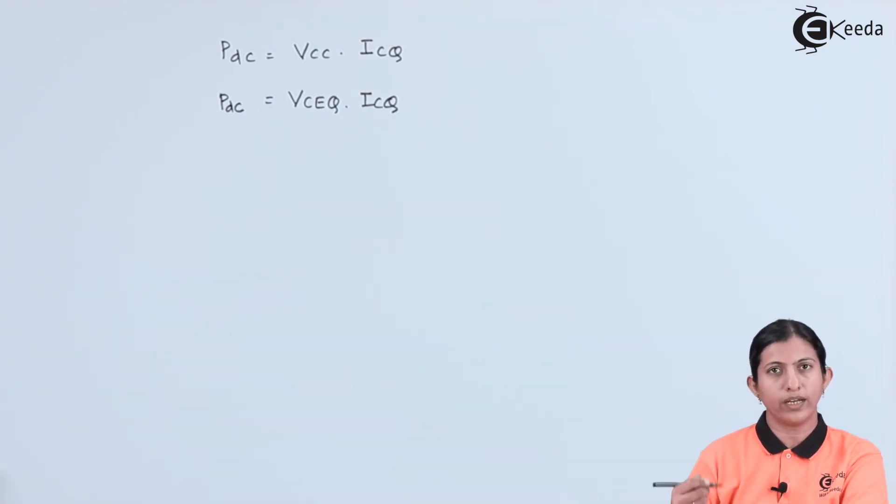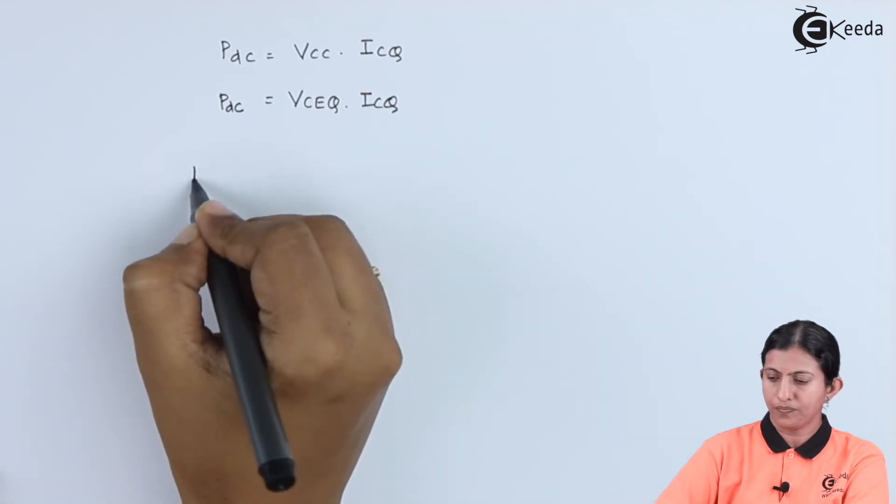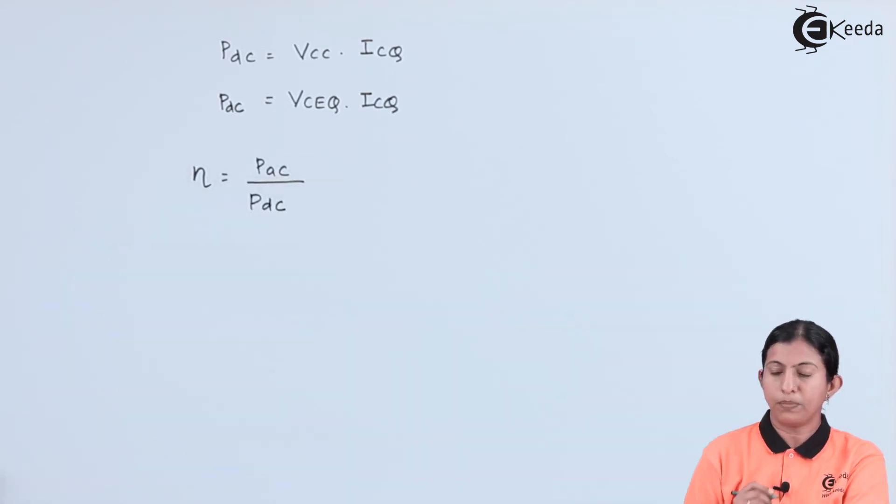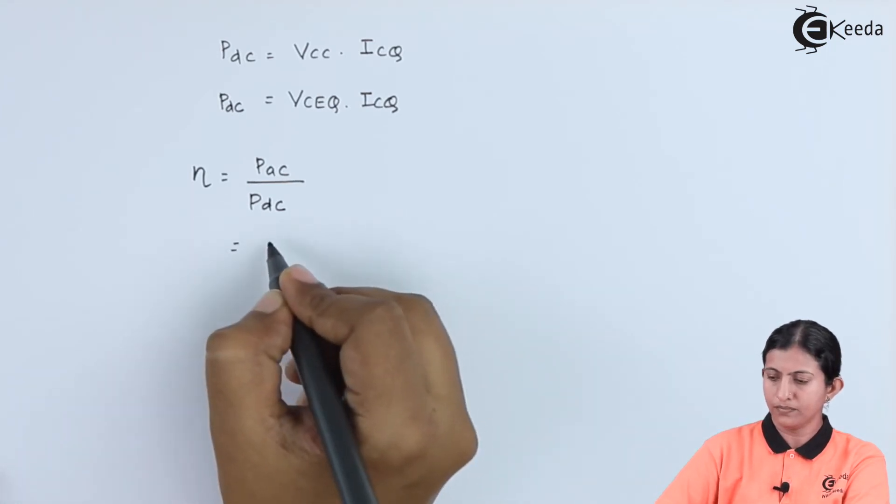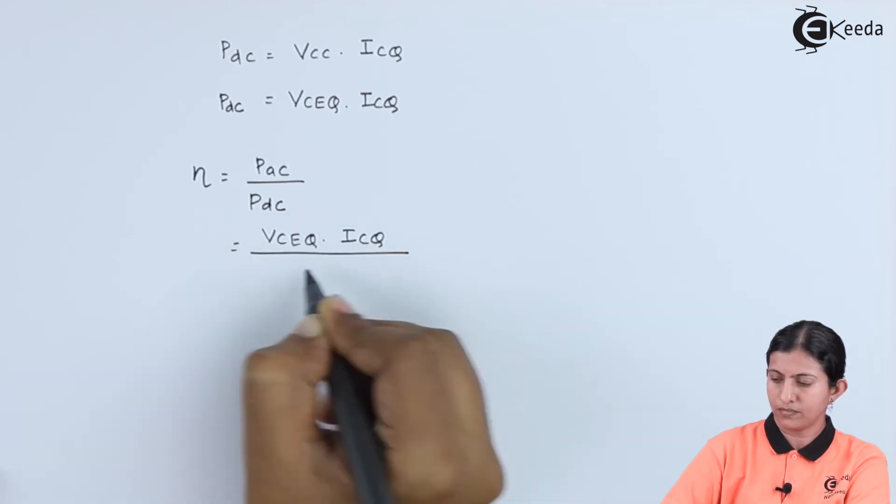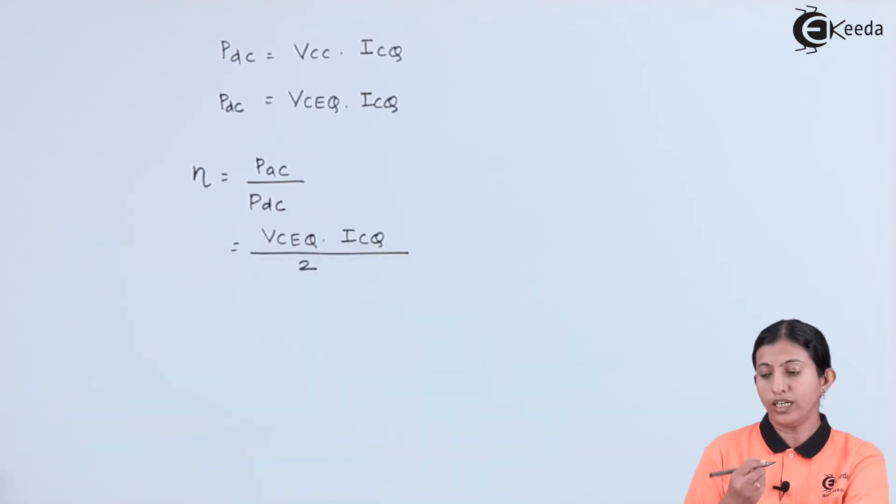We will take the ratio to get the efficiency. Efficiency is equal to PAC divided by PDC. PAC is equal to VCEQ into ICQ divided by 2, and PDC is equal to